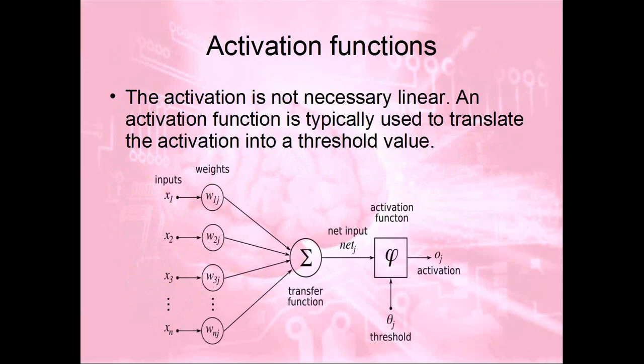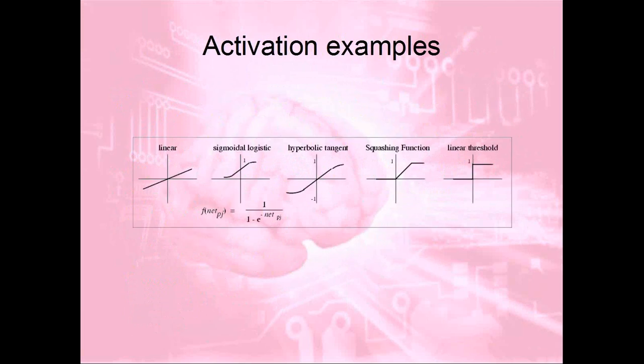Here we show a neuron a little bit more complicated. On the left you have the inputs, which are multiplied by the weights. They are summed together: input 1 times weight 1, plus input 2 times weight 2, plus input 3, and so on. That output goes to what we call an activation function. There are different activation functions to choose from, and if a threshold is achieved the function will fire the result. Examples you can choose from include linear, sigmoidal, or hyperbolic.